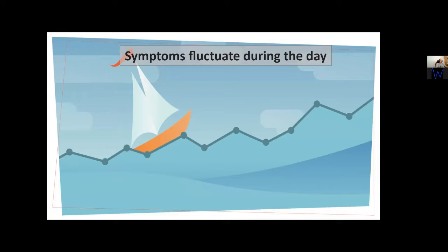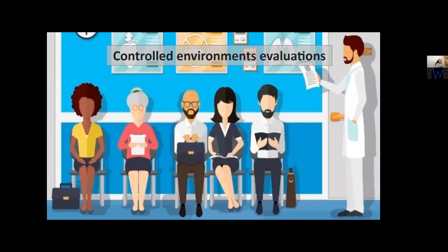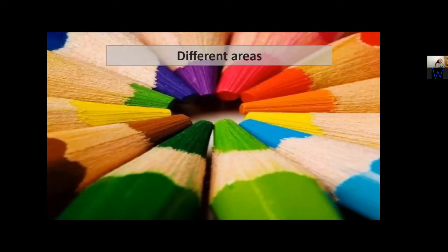Most symptom fluctuations happen outside clinical appointments. Patients are primarily evaluated in controlled environments where a neurologist assesses their current stage by asking questions and conducting relevant assessments. But evaluation is multidisciplinary — physiotherapy evaluates motor impairments, psychology evaluates cognitive malfunctions — and the sum of all these areas builds a picture of where the person is at the current disease stage.